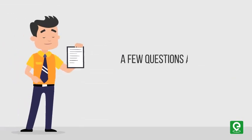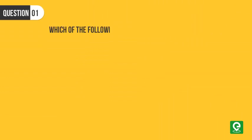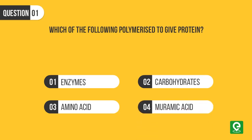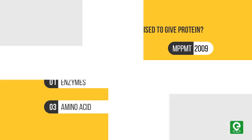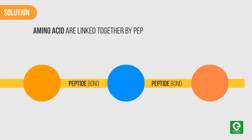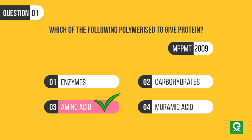Let's answer a few questions asked in medical entrance exams. Question 1: Which of the following polymerizes to give protein? (1) Enzymes, (2) Carbohydrates, (3) Amino acids, (4) Muramic acid. This question was asked in MP PMT 2009. Solution: Amino acids are linked together by peptide bonds to form protein, so option 3 is the correct answer.